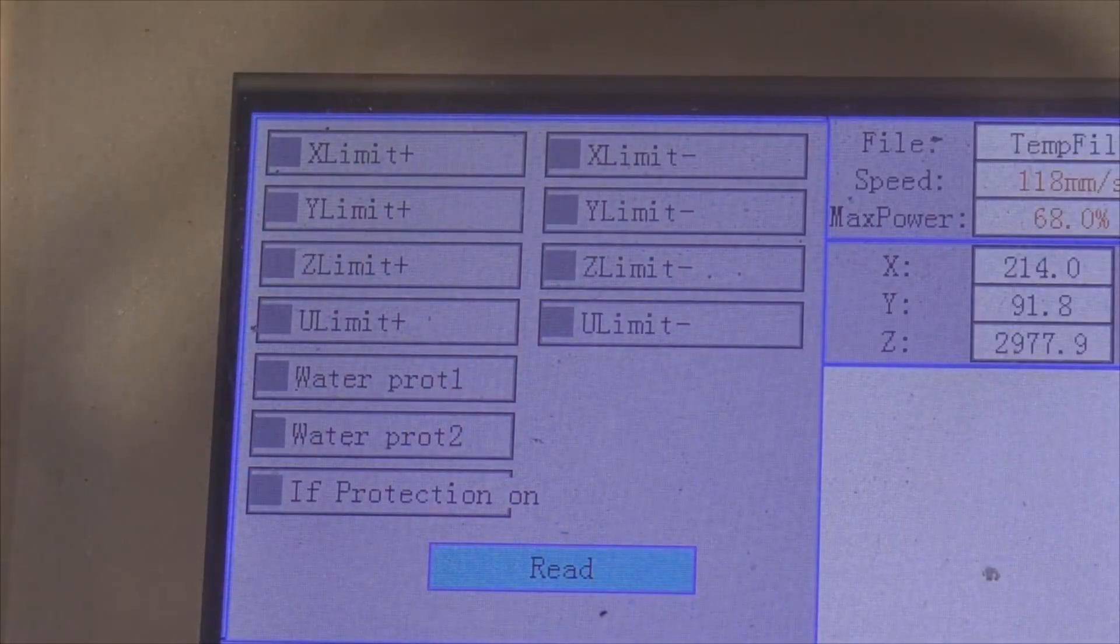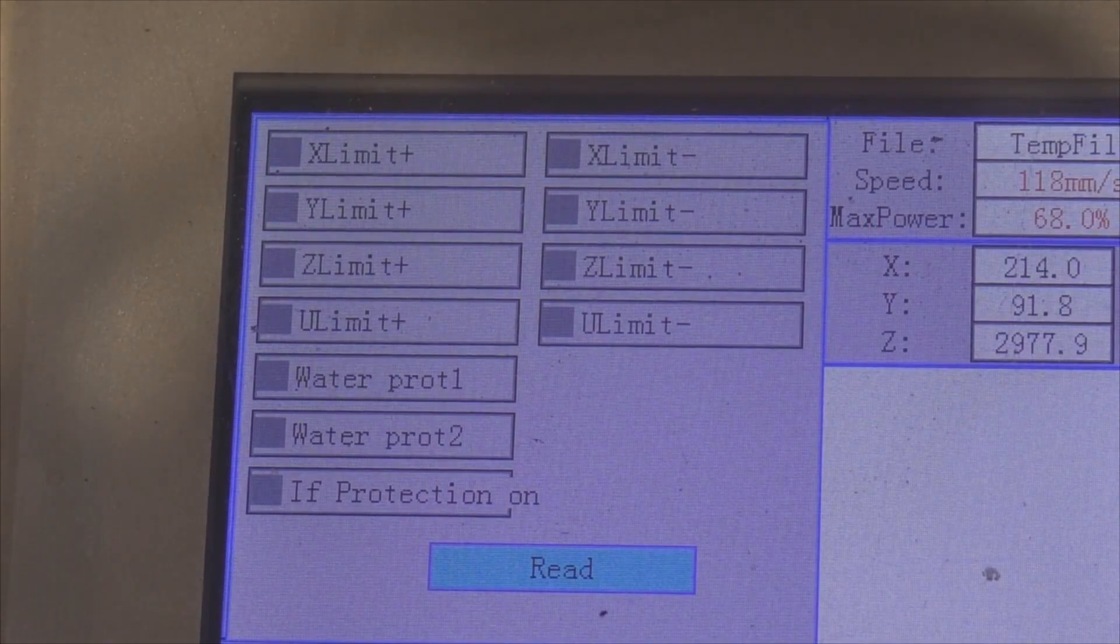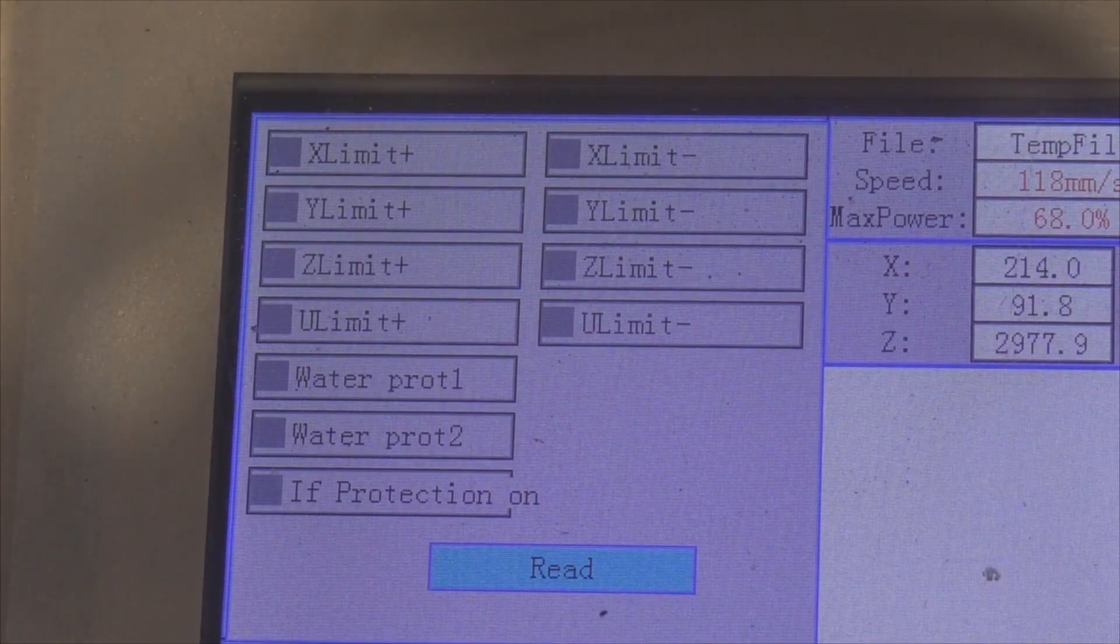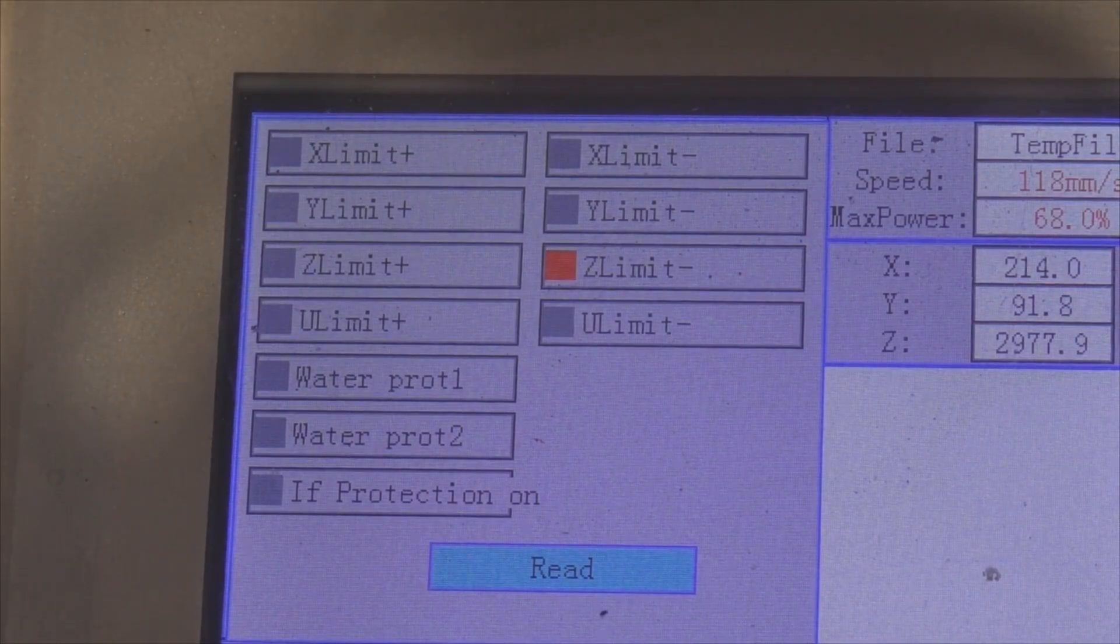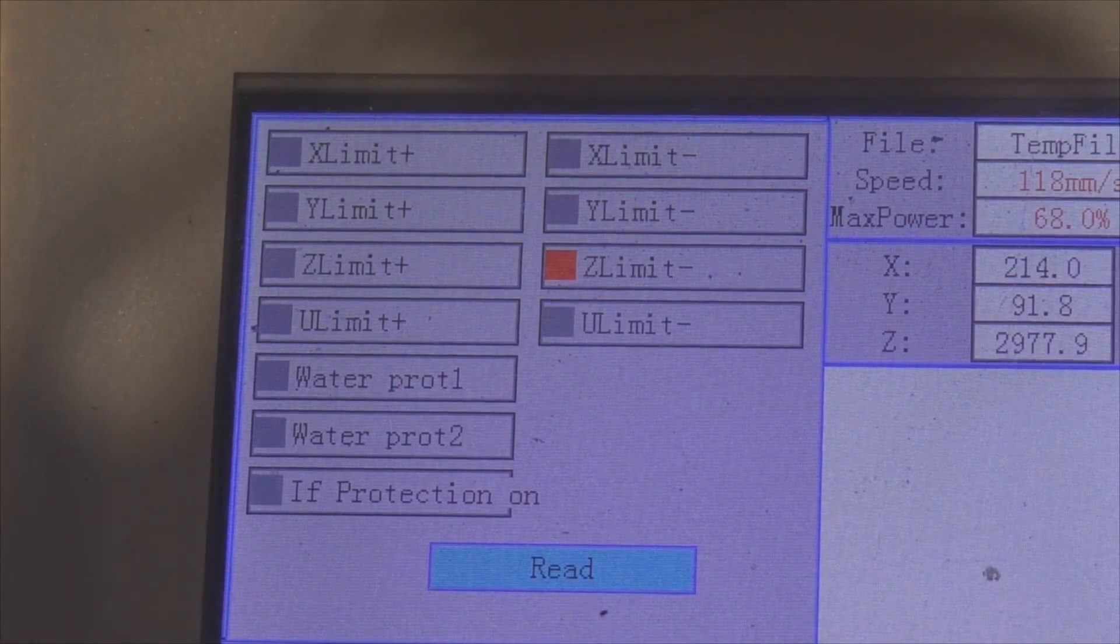Now the Z minus at the moment is black, but if I adjust it downwards to make it switch—there we go, the sensor has just switched—and then I'll lock the sensor up.